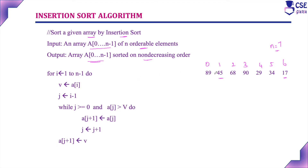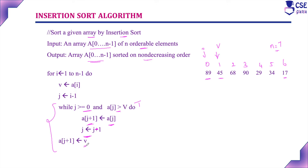v is equal to A of i — the element at position i. j is initialized to i minus 1, considering the element at the previous position. The while loop condition is: while j is greater than or equal to 0 and A of j is greater than v, we perform an exchange — assigning A of j to A of j plus 1, then decrementing j. This loop executes until both conditions are true. Once the condition fails, the loop exits and assigns v to A of j plus 1.